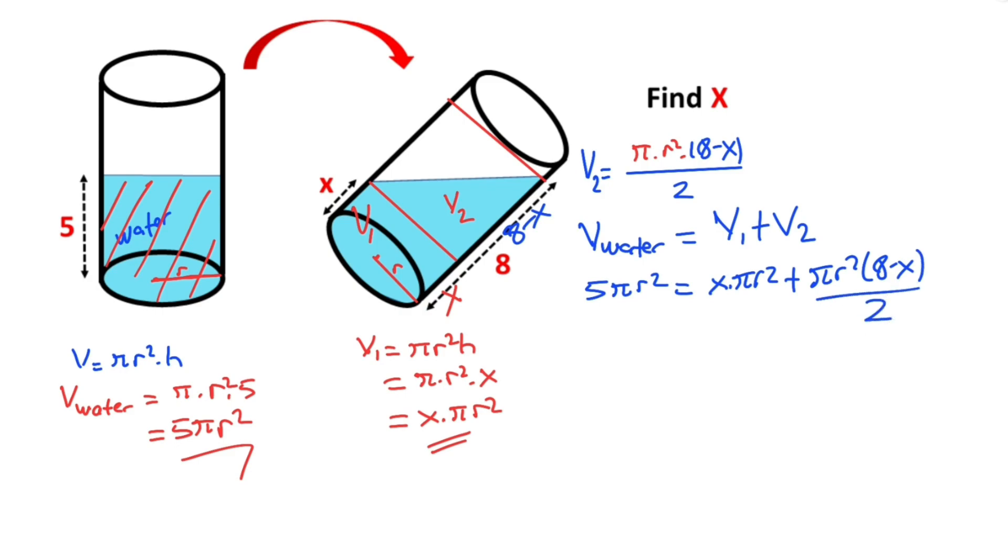Notice that pi r squared is common factor. So if we call pi r squared as y, therefore, the equation turns out to be 5y equal yx plus y times 8 minus x over 2.